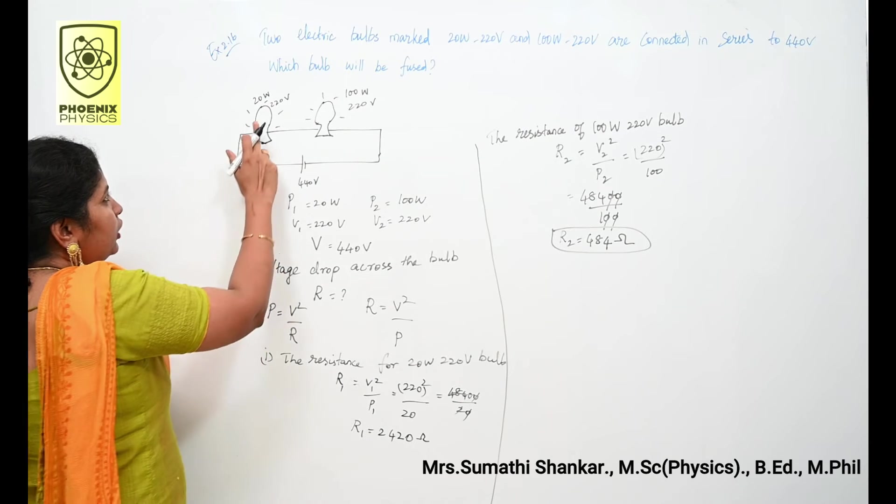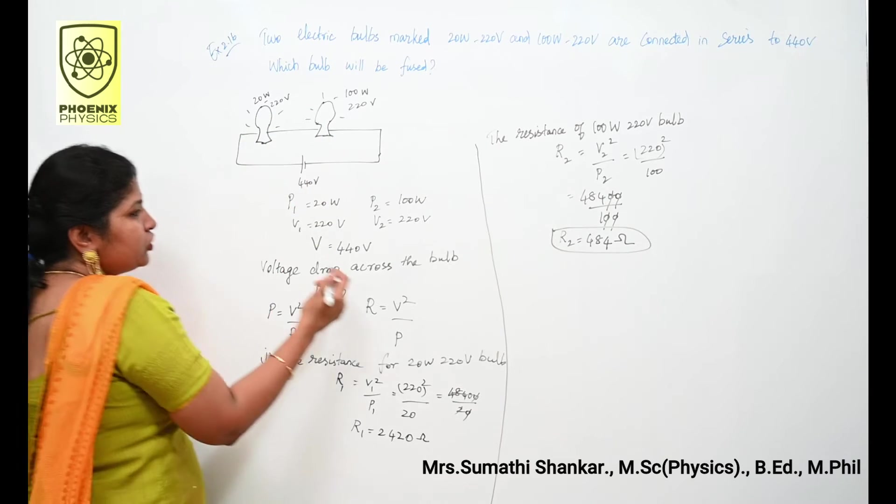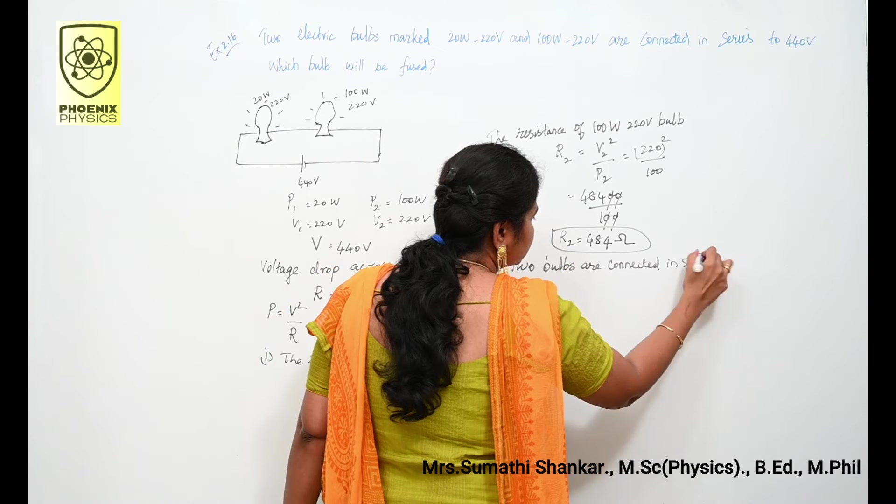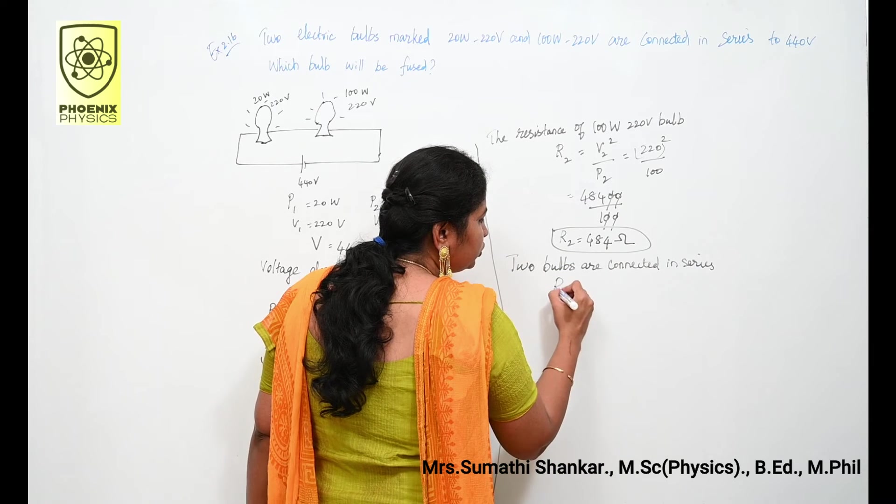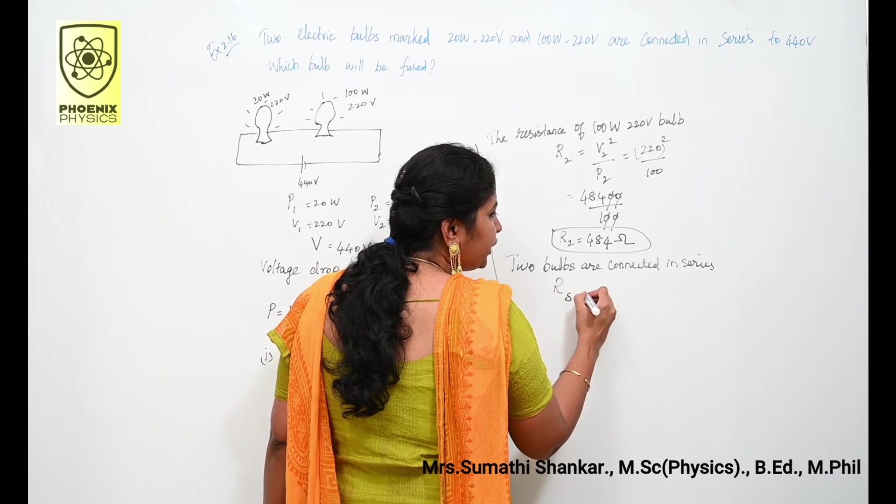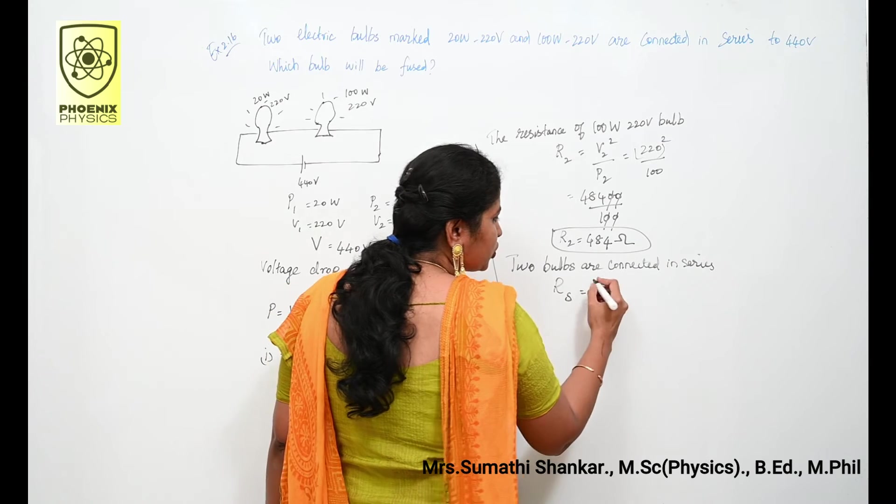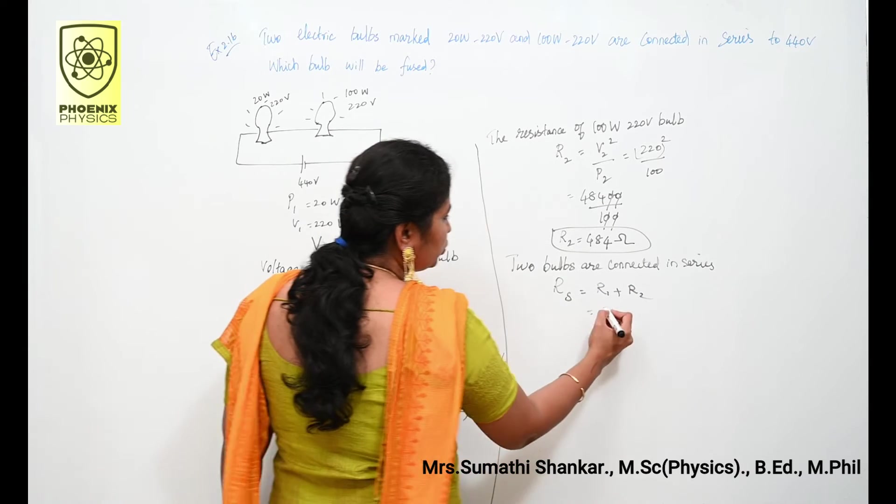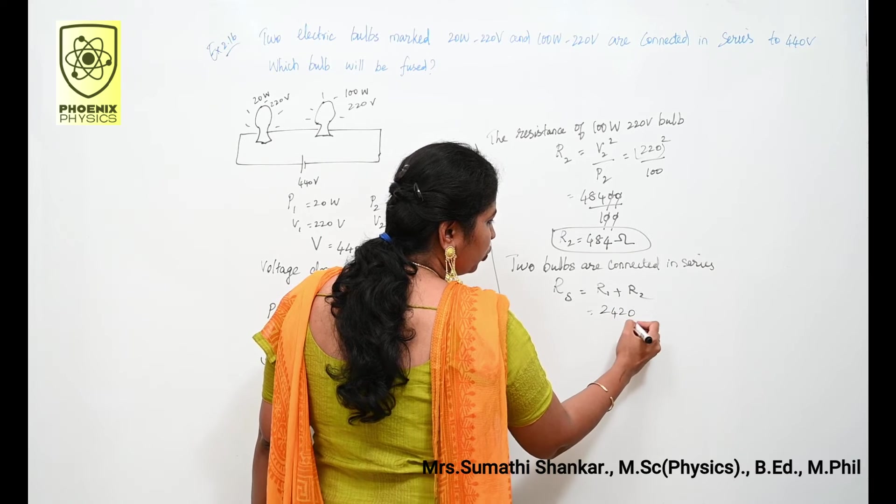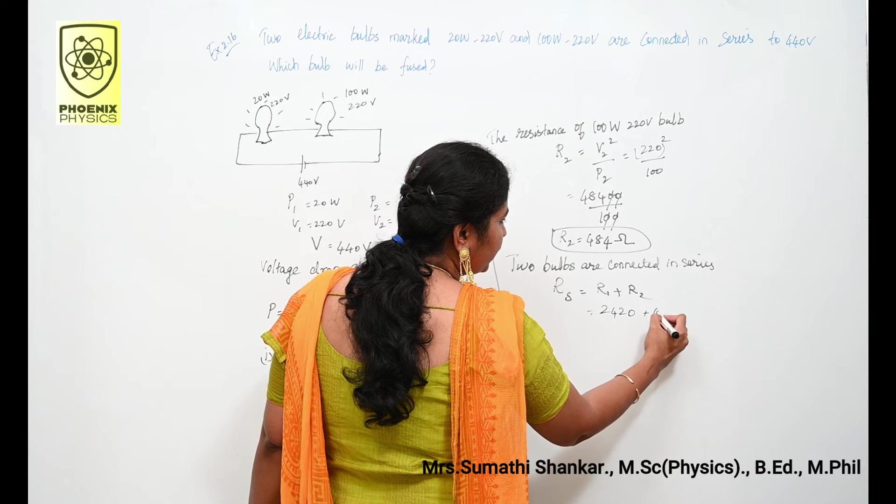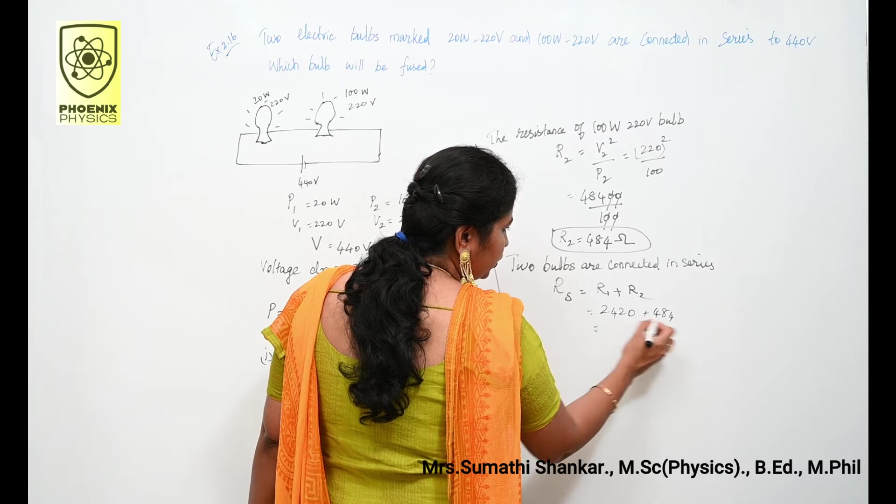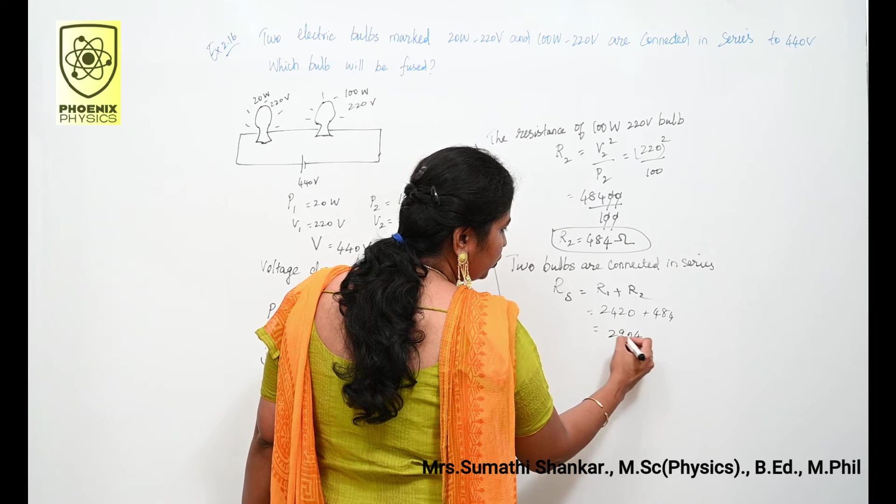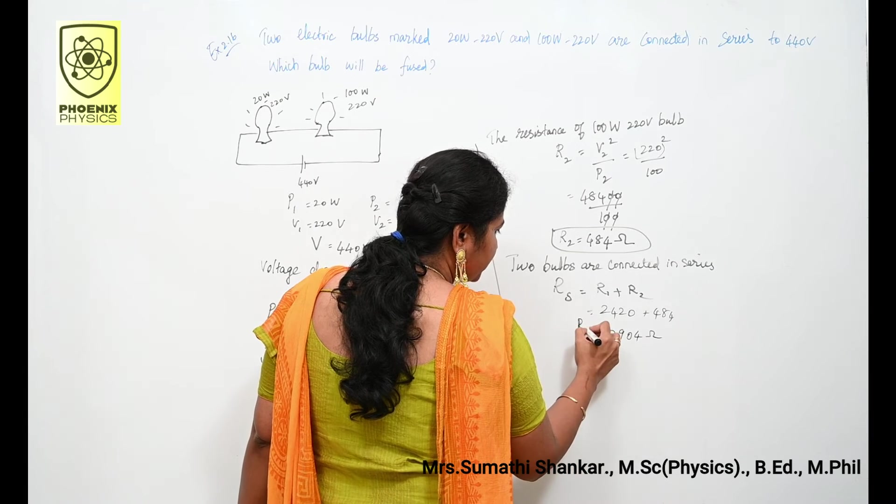Here two bulbs are connected in series. So how do you find out the total resistance or equivalent resistance? That is Rs is equal to R1 plus R2. R1 is 2420 ohm plus R2 is 484. Add these two, your answer is 2904 ohm. This is my Rs.